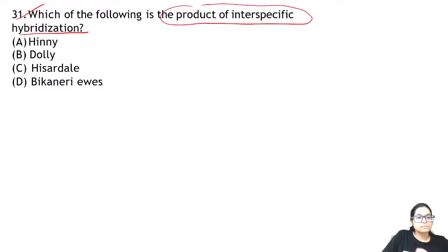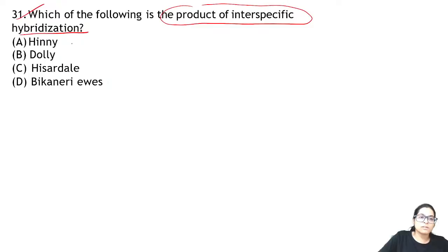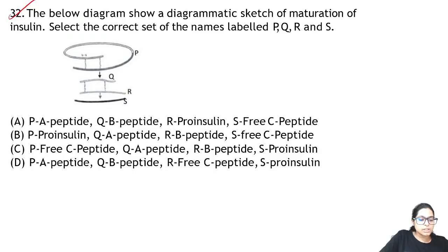Zoology Question 31: which of the following is the product of interspecific hybridisation? It is the mule — a cross between two species, donkey and horse. Answer for 31 is A.